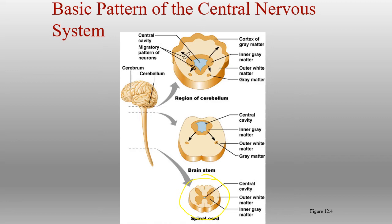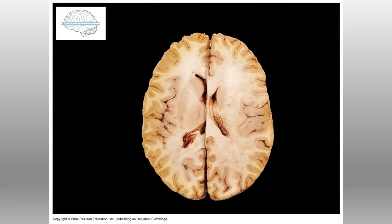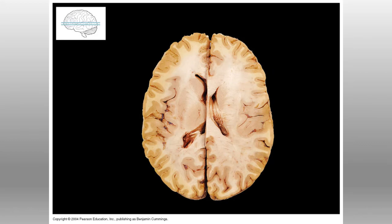Here we can see the spinal cord with that H or butterfly pattern for the gray matter. The cerebellum has gray matter on the outside and white matter on the inside. In the gross brain image, we can see the outer cortex — the darker tissue on the outside — is all gray matter, and everything deeper is white matter, though there are still some gray matter nuclear regions with cell bodies. This also gives a good view of the lateral ventricles opening up inside the cerebrum, running from anterior to posterior with an anterior horn, posterior horn, and inferior horn.